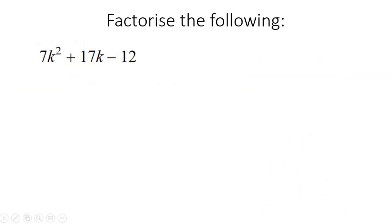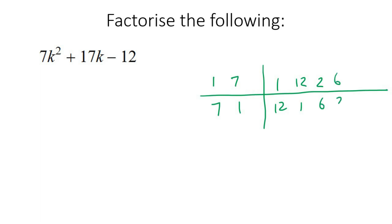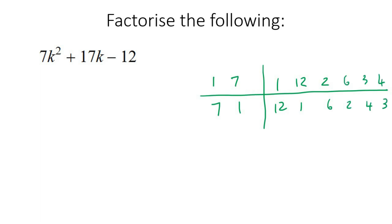Here's our next example. Can you take out a common factor? No — there is no number that goes into 7, 17, and 12. So we use our technique. Do all the factors of 7 — only 1 times 7 and 7 times 1. Then 12: 1 times 12, 12 times 1, 2 times 6, 6 times 2, 3 times 4, 4 times 3.